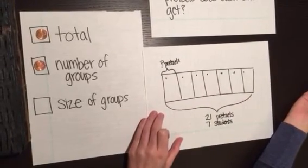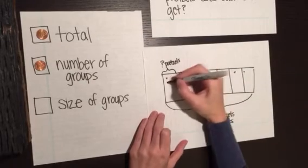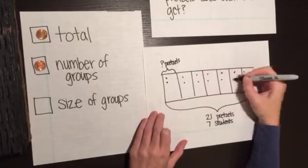Think about if I still need to keep going. Yes, because I'm not at my total yet. Eight, nine, ten, eleven, twelve, thirteen, fourteen.